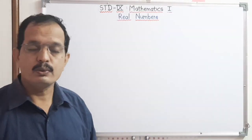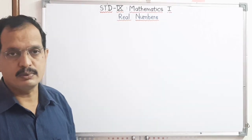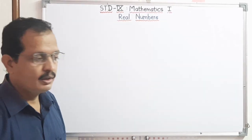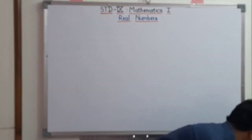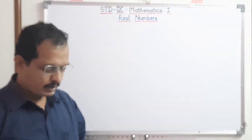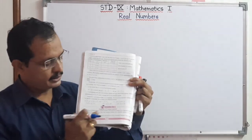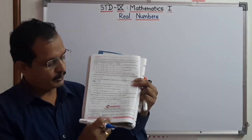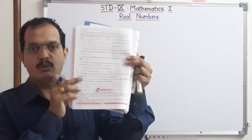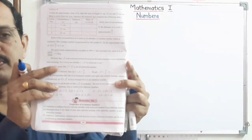First of all we have to learn the properties of irrational numbers which are given on page number 24 in the part 'Remember This'. See, on page number 24 these properties are given and we have to learn them now.